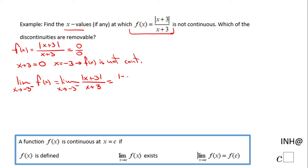So I'm going to have absolute value of negative 3.1 plus 3 over negative 3.1 plus 3. If you notice here, we're going to get 0.1 over negative 0.1. We're going to get negative 1. This limit is negative 1. And if you get closer and closer to negative 3, you'll notice it will be negative 1.